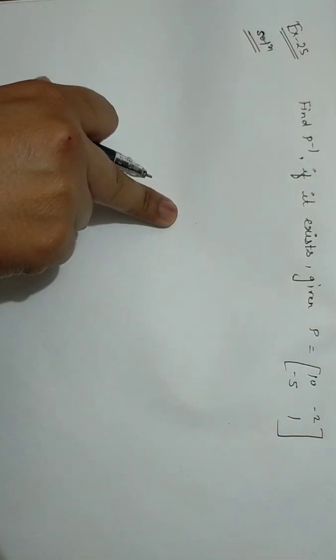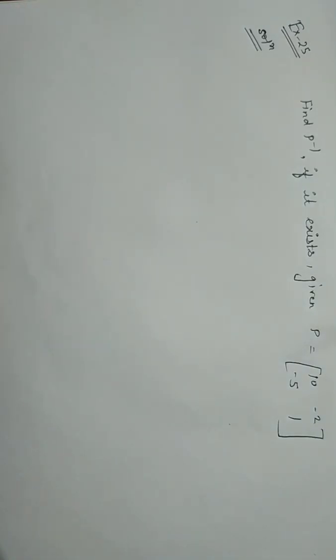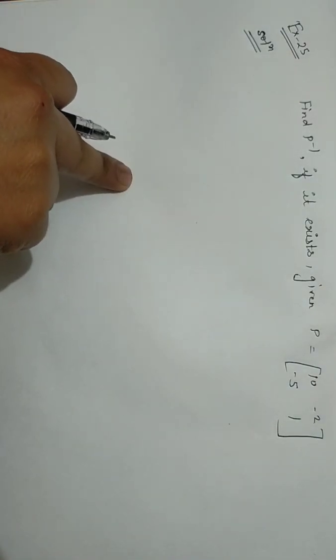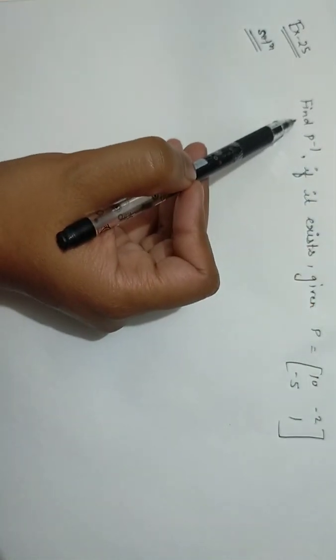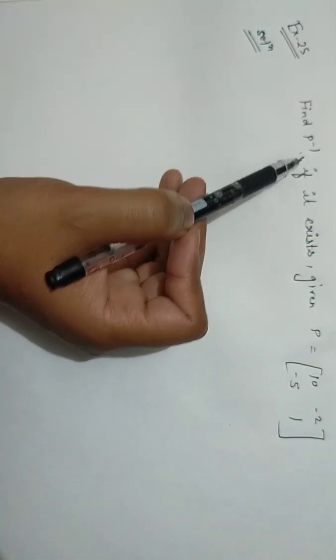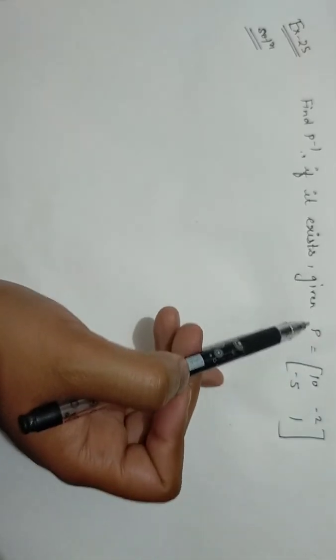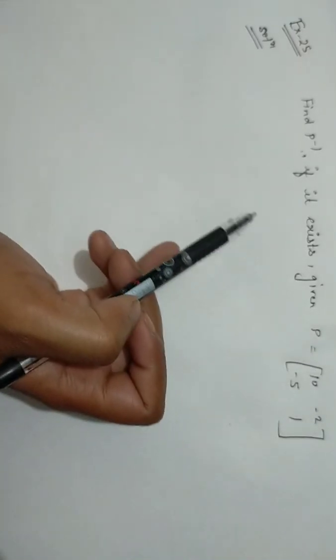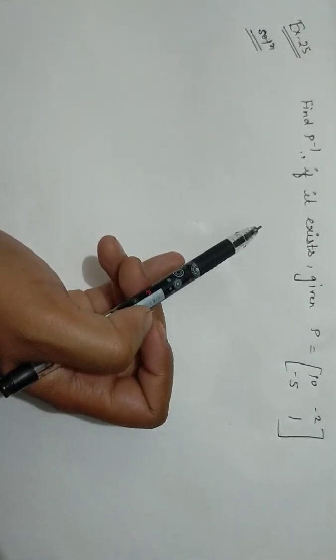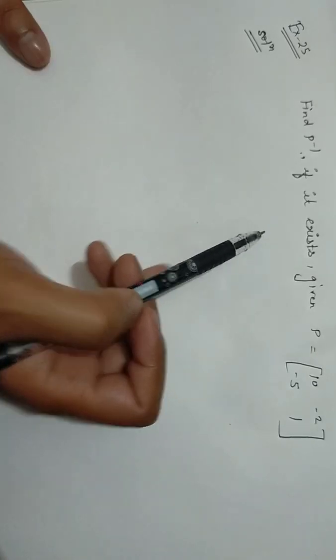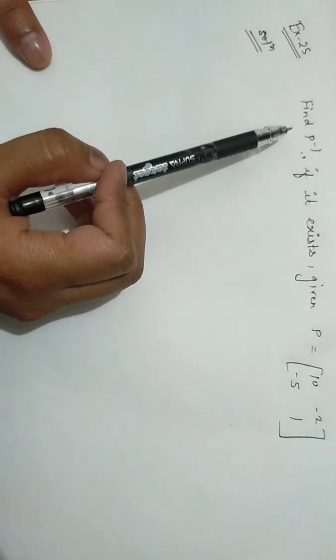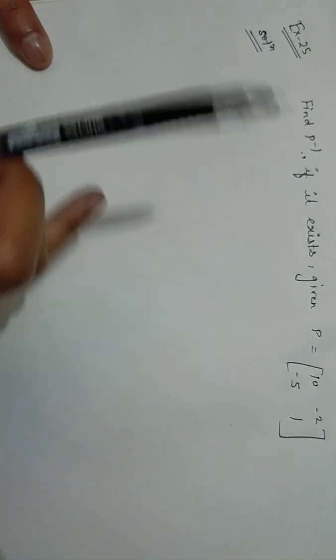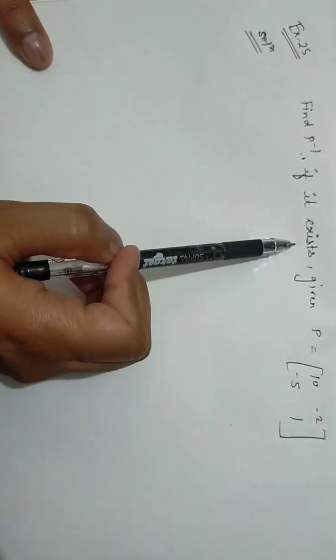Students, in the last video we discussed how to find the inverse of any given matrix using elementary row operations. Now in Example 25, you have to find P inverse if it exists, given P is equal to this. So here, with the help of the given matrix, you have to find out its inverse if it exists.